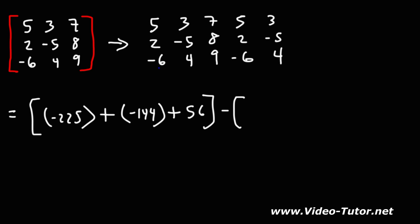Now, starting from the bottom left, let's multiply those three numbers. Negative 6 times negative 5 is 30, and 30 times 7: 3 times 7 is 21, so 30 times 7 is 210. Since we have two negative signs, it's going to be positive 210.